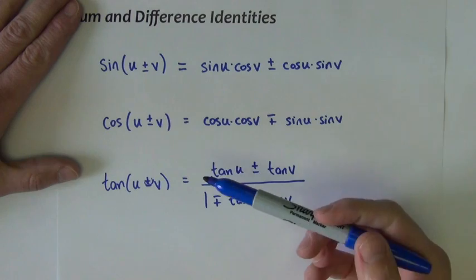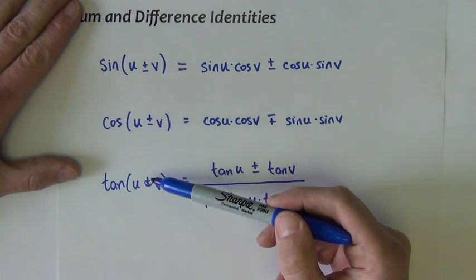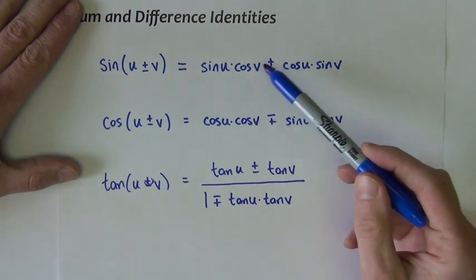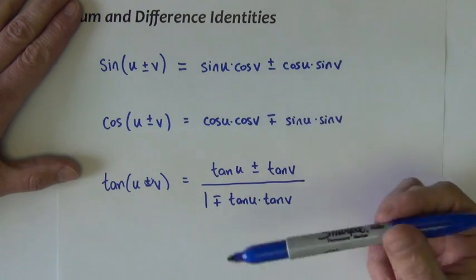We don't have identities for cosecant, secant, and cotangent because they're just simply the reciprocals of whatever this would work out to be.